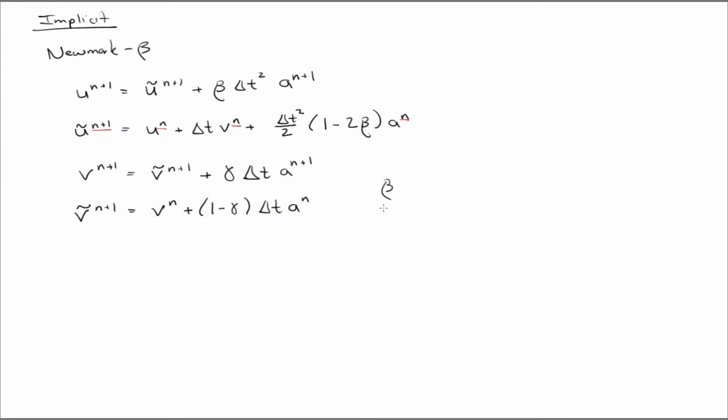So beta and gamma are parameters that you can choose, and your choice of beta defines the scheme. And we'll see in a second that one choice of beta gives you back an explicit central difference scheme. So this is sort of a generalization. And gamma is a damping parameter.